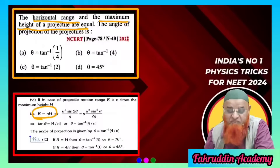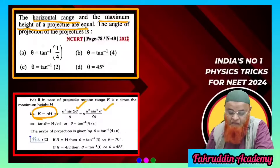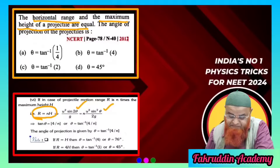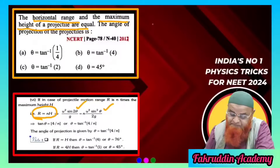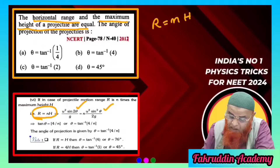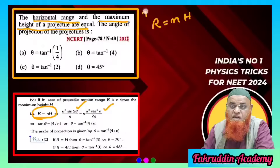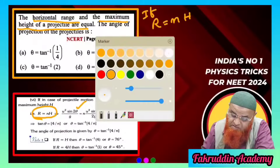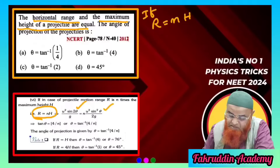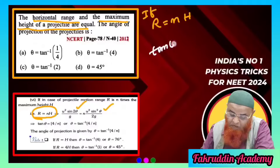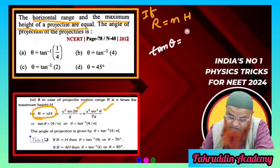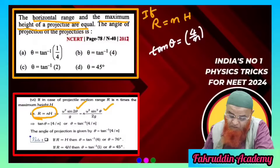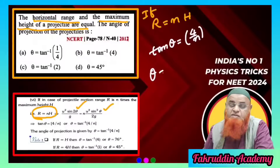The shortcut: if range R is n times the height H, write the formulas for range and height and simplify. You will find that tan θ = 4/n. This means θ = tan⁻¹(4/n).